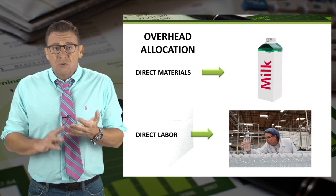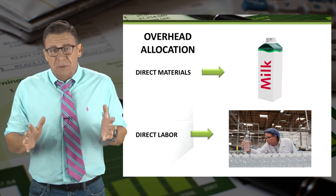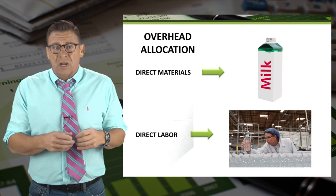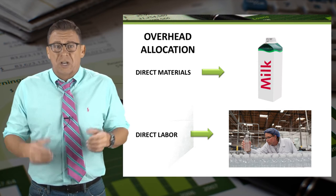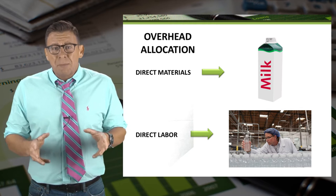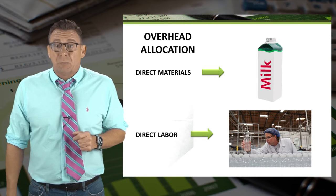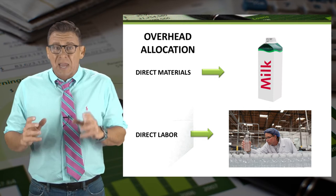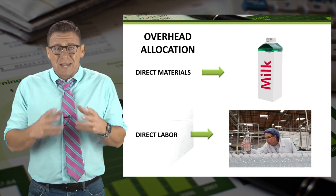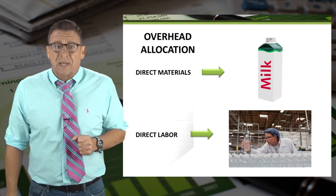Direct materials is a concept most understood because they end up in the product or the product packaging. Direct labor is also fairly understandable because it's the labor cost to directly assemble or manufacture the products.